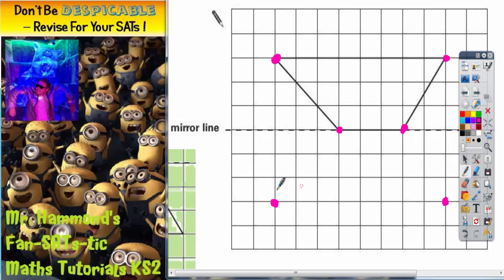Once we've got our three corners we just simply join them up. Obviously you would use a ruler for this. And once you've joined them up that is your reflected shape.